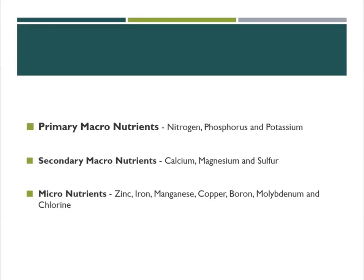Fertilizers contain these kinds of nutrients, and these nutrients are further classified into three. First is the primary macronutrients, which are composed of nitrogen, phosphorus, and potassium, which are commonly used in inorganic fertilizers. Second is the secondary macronutrients in the form of calcium, magnesium, and sulfur.